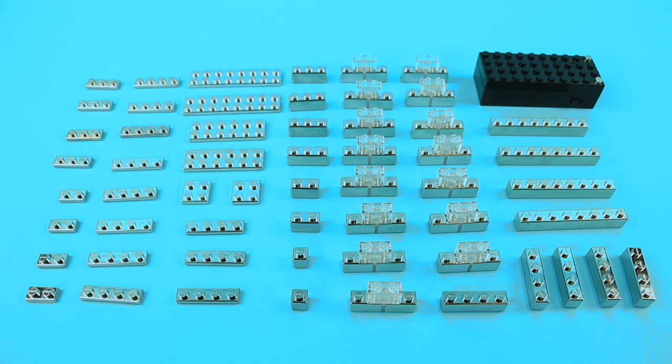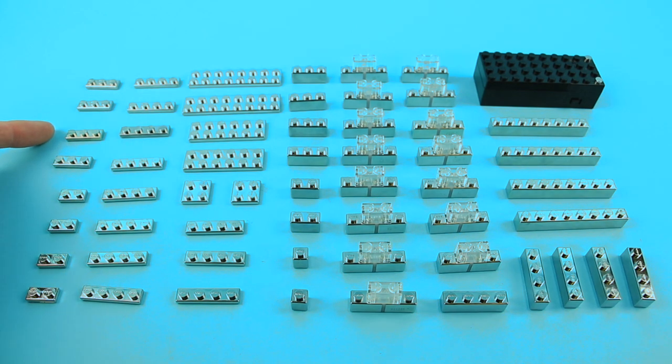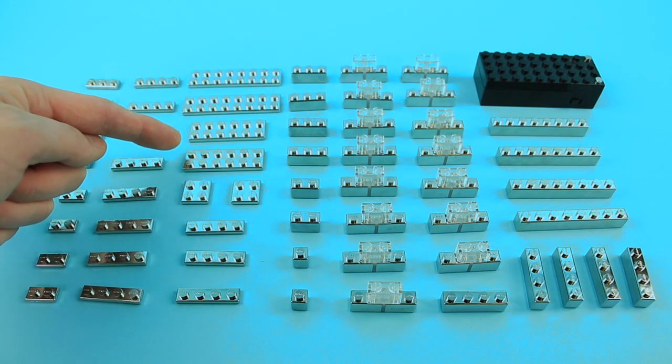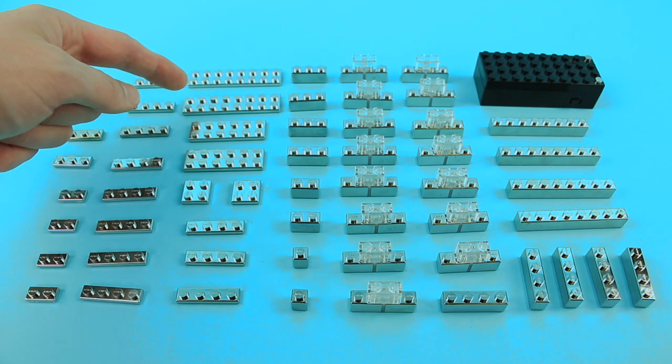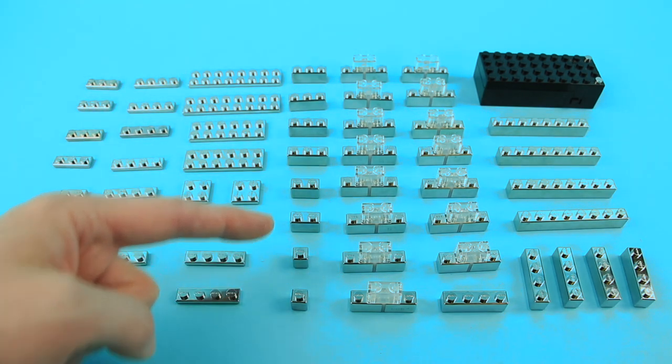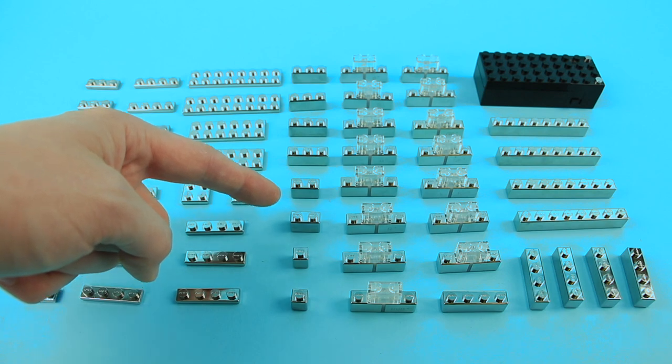These are the pieces you will need to build the girl. Four 1x2 plates, four 1x3 plates, eleven 1x4 plates, two 2x2 plates, two 2x6 plates, two 2x8 plates, two 1x1 bricks, two 1x2 bricks, and four 1x3 bricks.